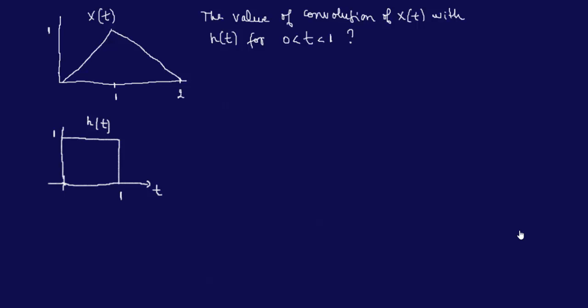This is another example on convolution, following up the last video, so you should watch that one first to get a feel for it. This is a continuation. The example is straight from the NCCS book: the function X of T is to be convolved with H of T. The functions are given and the question is to find the value of the convolution of X of T with H of T for T between 0 and 1.